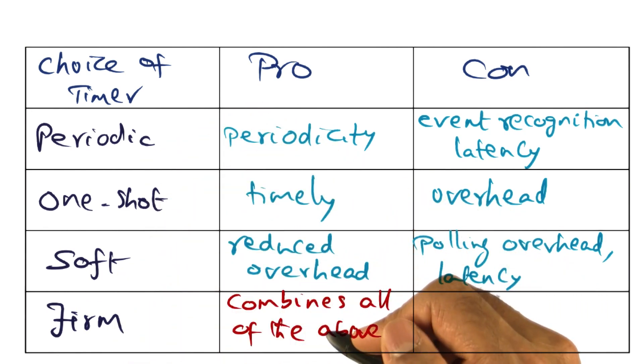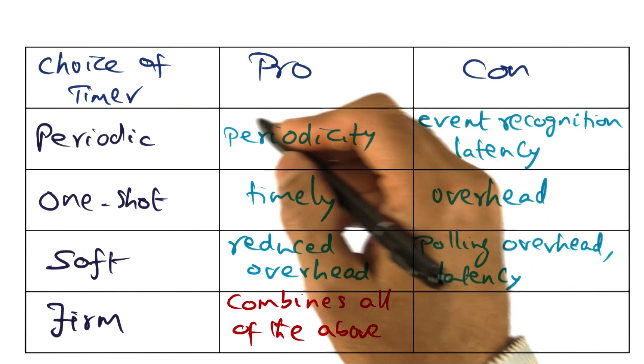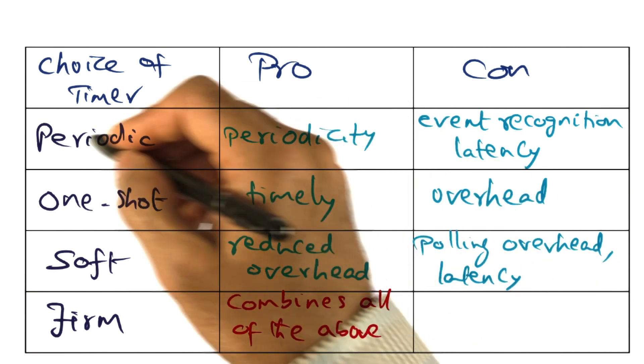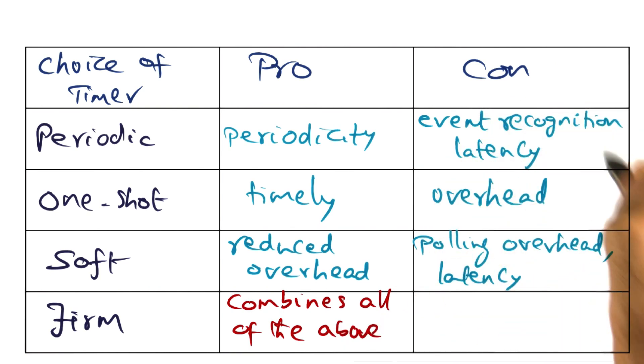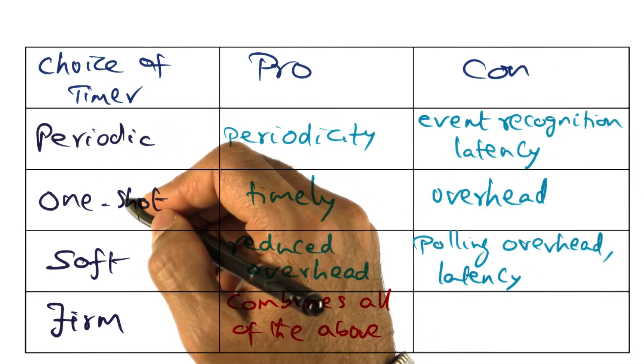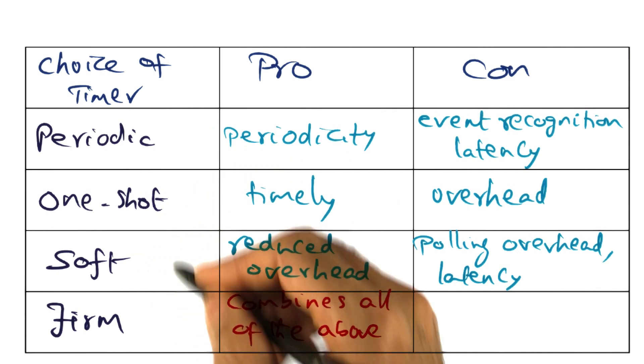Essentially, what firm timer is trying to do is take the pros of all of these types of timers in its implementation so that it can avoid the cons associated with each one of these individual choices.